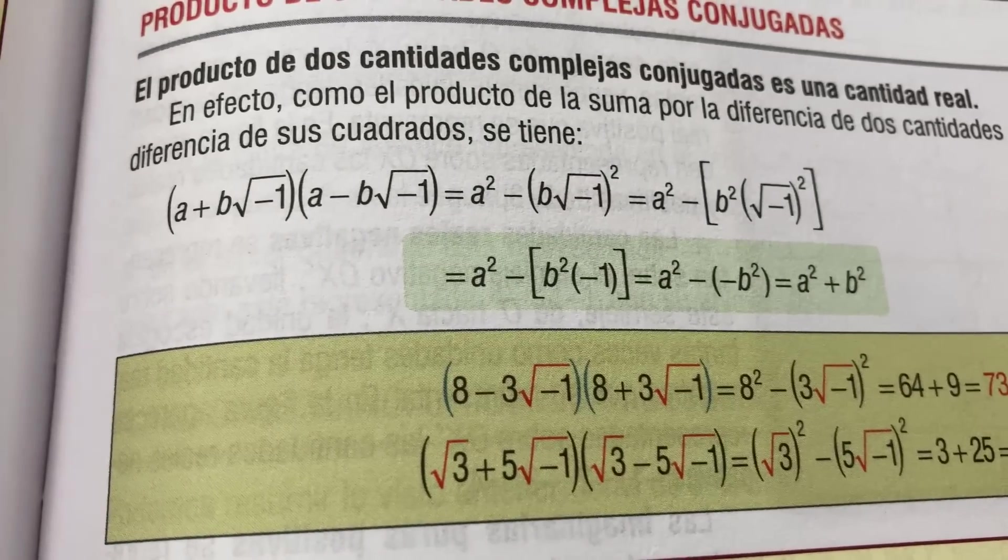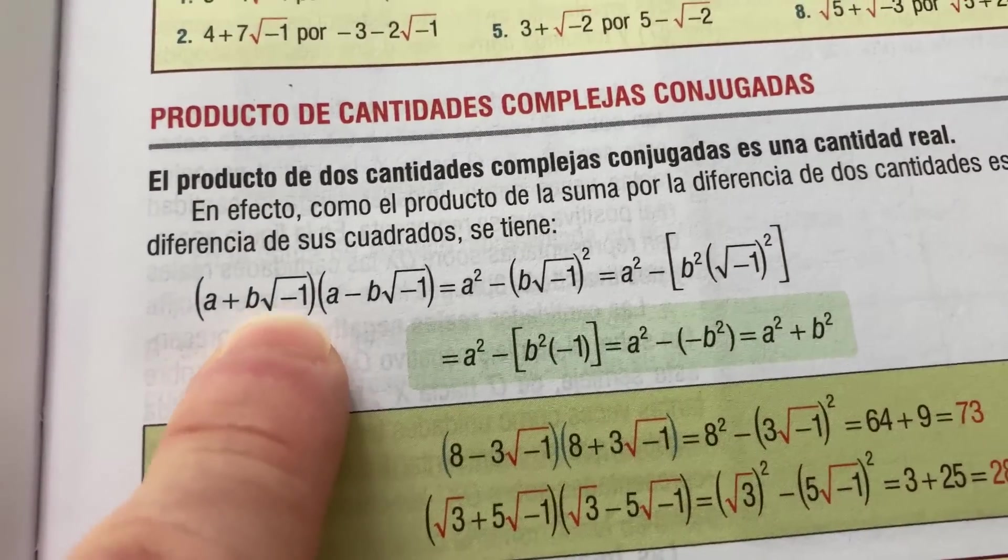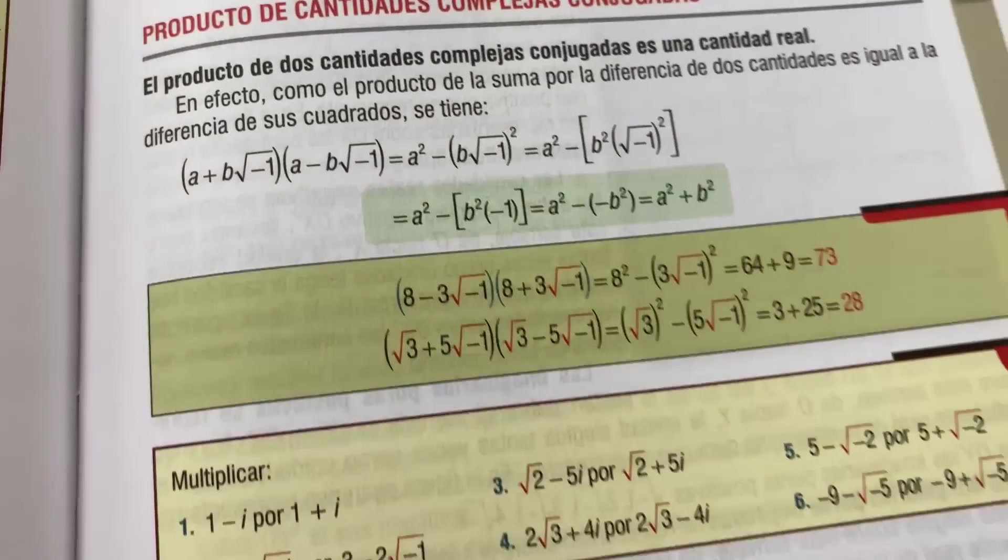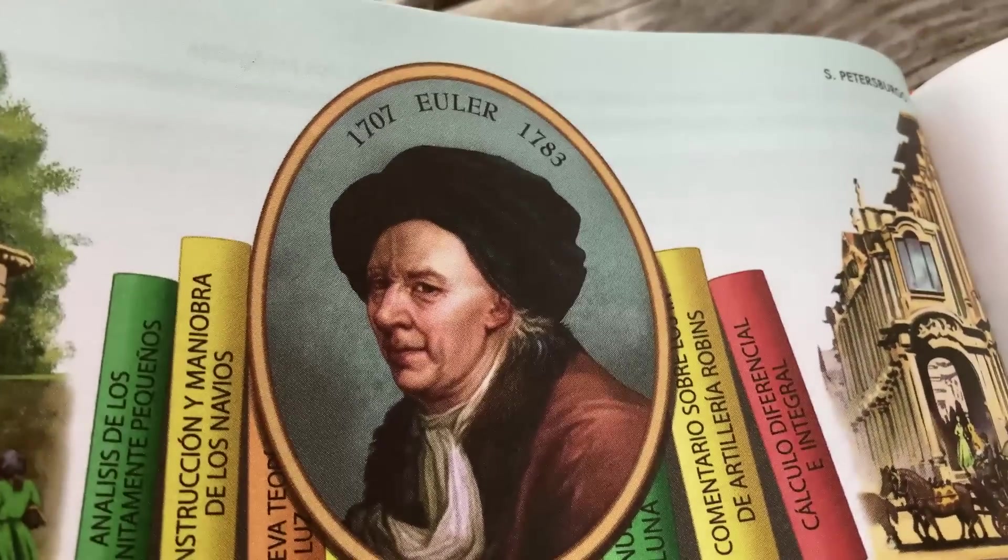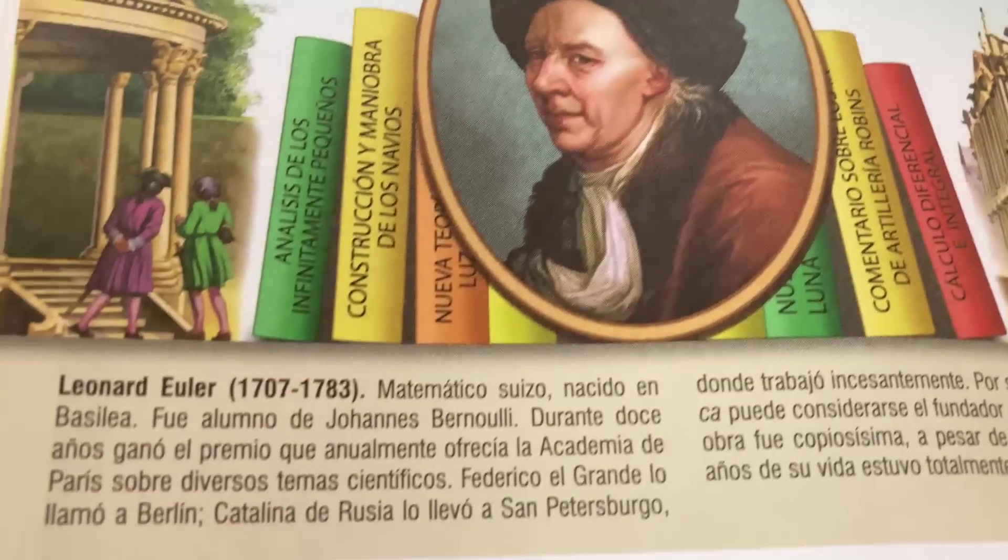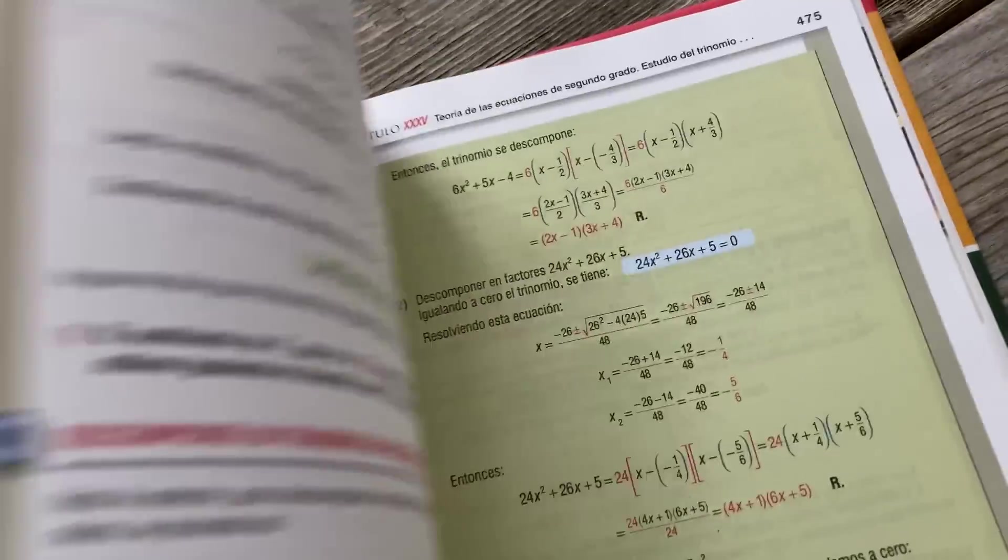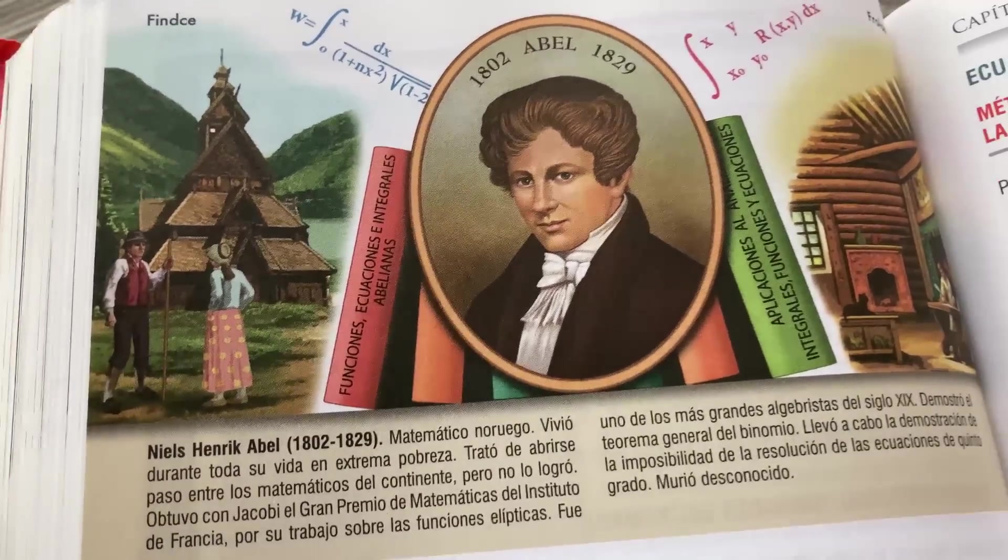This is serious stuff here. Complex numbers—look at that, that's pretty cool. They go through the proof that if you do (a + bi) times (a - bi), you're going to get a² + b², looks like that's what they're doing here. Pretty cool, except they don't actually call it i here. There's Leonard Euler, 1707 to 1783, and it tells you a little bit about the great Leonard Euler. It does that at the beginning of each chapter, so it'll have a mathematician here, like Niels Henrik Abel.